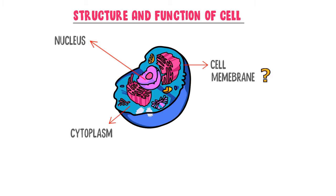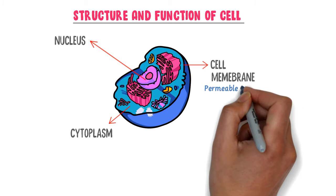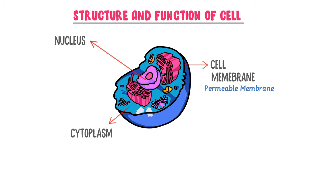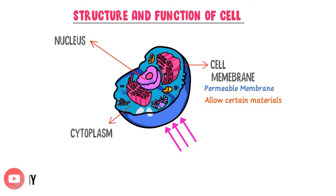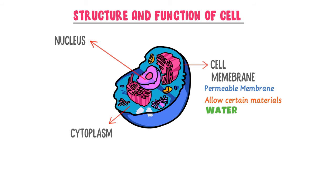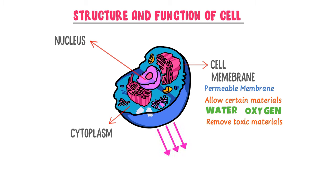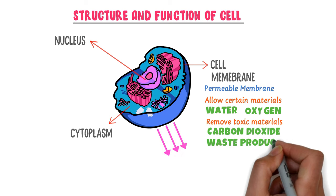What is the cell membrane? It is the selectively permeable membrane which allows certain materials to pass through. For example, it allows essential ingredients to enter the cell, like water and oxygen. Secondly, the cell membrane removes toxic substances out of the cell, like carbon dioxide and waste products.